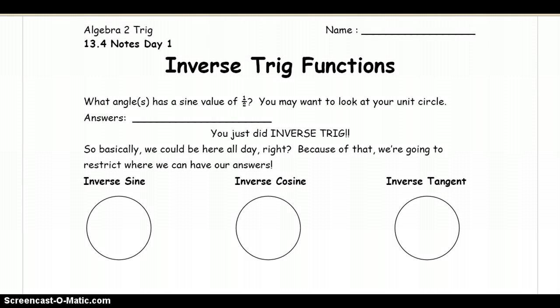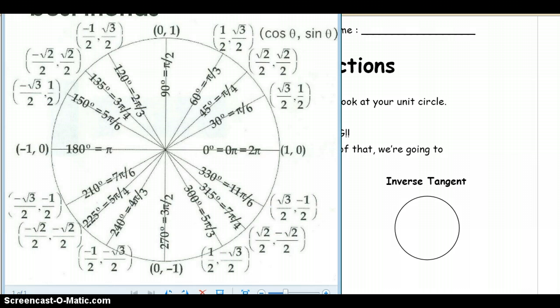So let's start with a question: what angle, or angles, have a sine value of one half? We're going to look back at our unit circle because we know that the sine value is the y value on the unit circle. So we're going to look at the y values where there's a half in the unit circle.